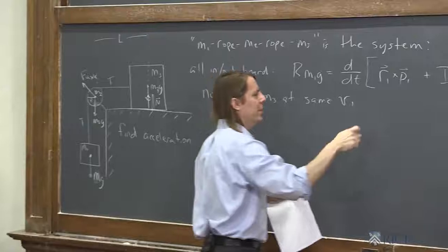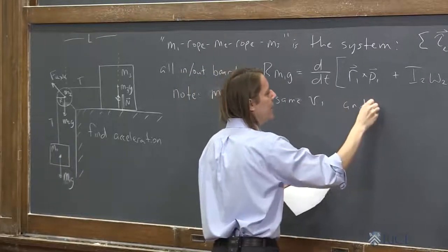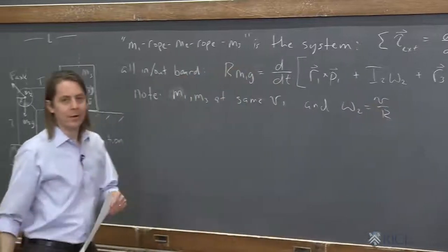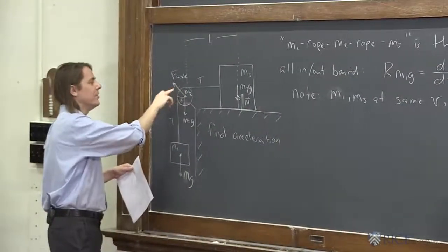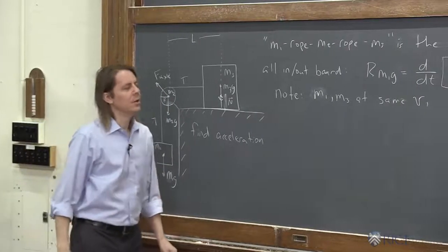And they don't slip on the disk. And omega 2 is V over R. So the rope defines the speed of the edge of the disk. So we have that standard relationship that we've talked about before.